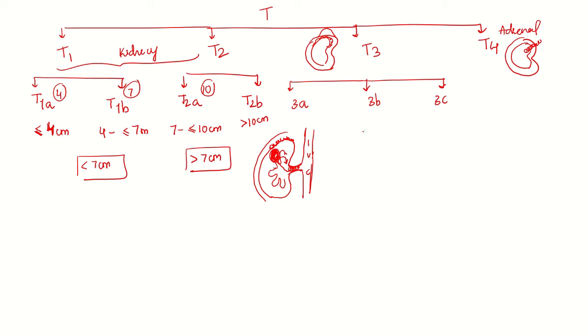In T3b, this thrombus slightly extends into IVC. The thrombus also contains tumor emboli. But it stays just below the diaphragm. It will not go beyond the diaphragm and similarly it will not extend beyond the Gerota's fascia. It will be confined within the perinephric fat.